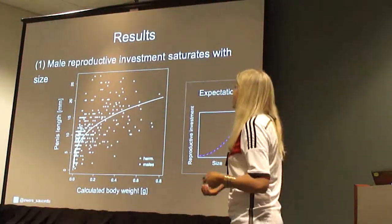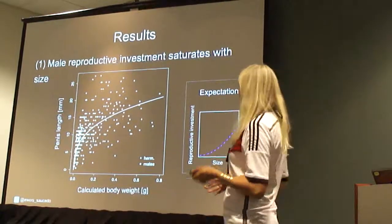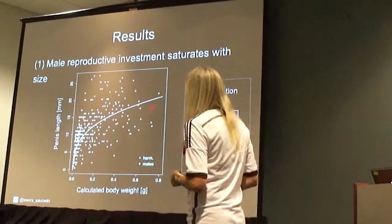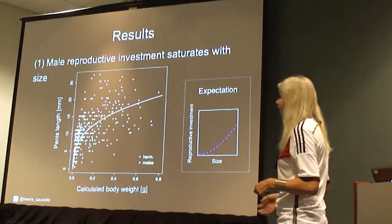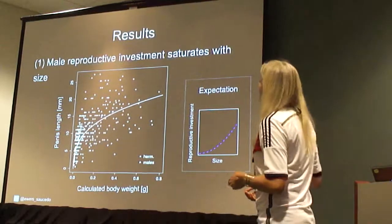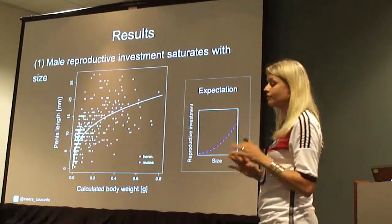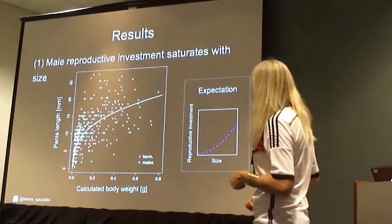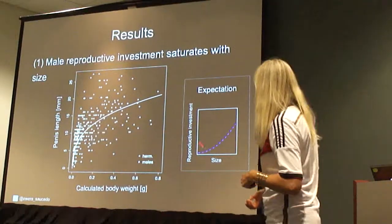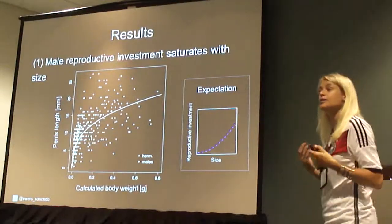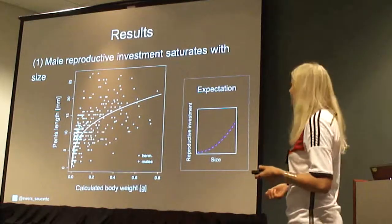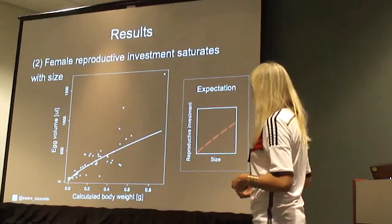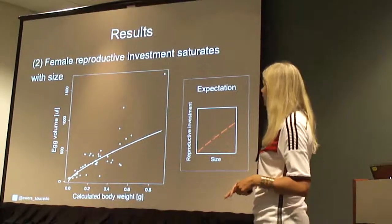Going on to the results, we find that male reproductive investment actually saturates with size very significantly. Here, on the x-axis, we have calculated body weight, which is our size measure. There was no difference neither for the host species that barnacles were collected from, nor for the sex — so males and hermaphrodites show the same pattern. This is contradictory to our expectation from sex allocation theory.